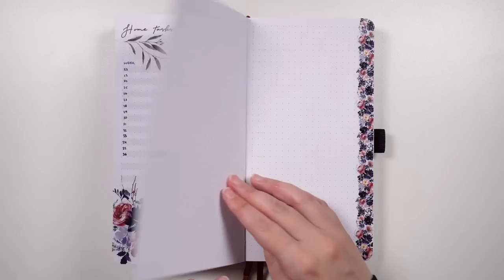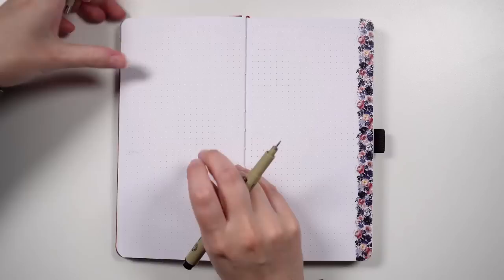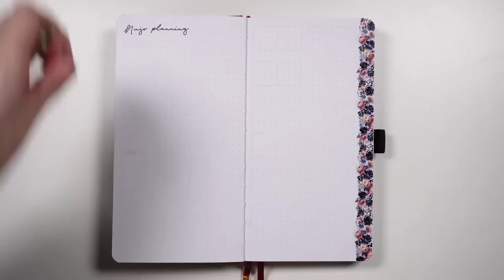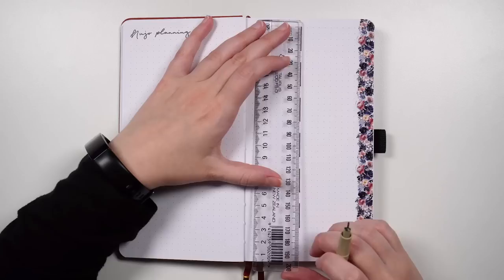Decoration finished, and flipping on over, this next layout is one that is kind of a staple in my everyday journal setups, but this is a My Next Bujo page, or Nujo Planning page. This is a dedicated space where I can write down ideas for my next journal setup.